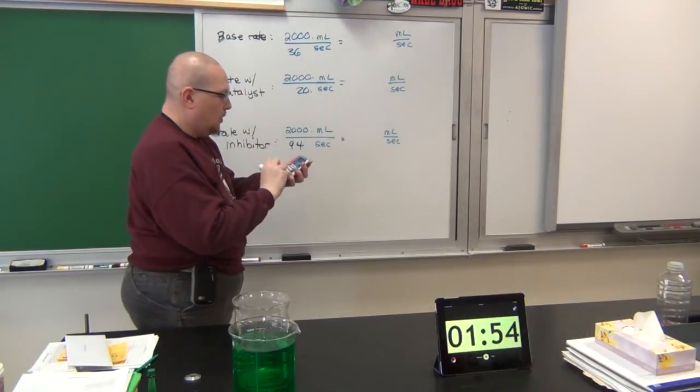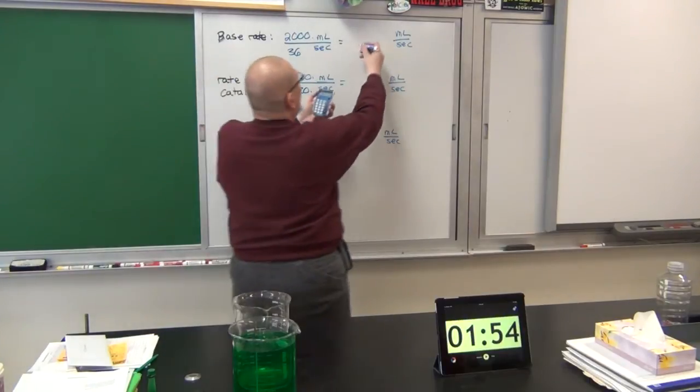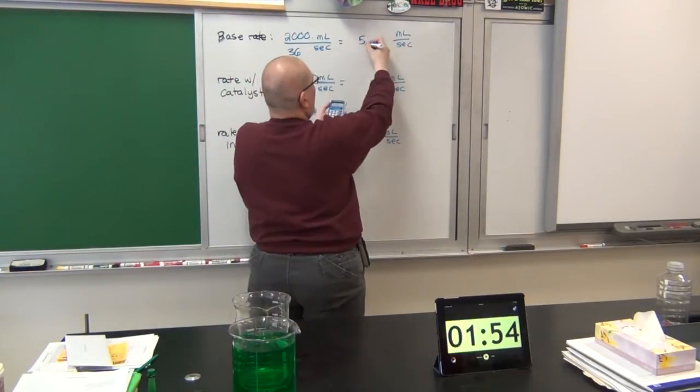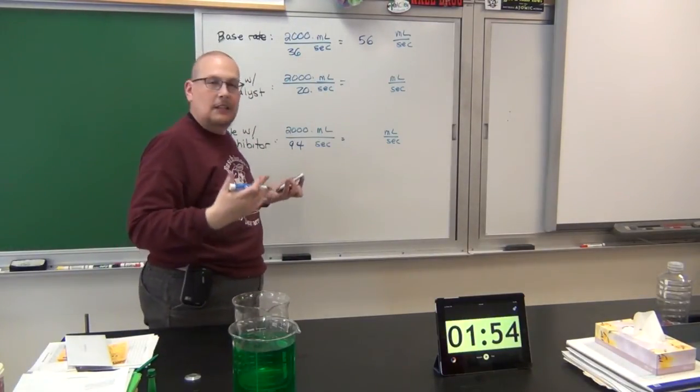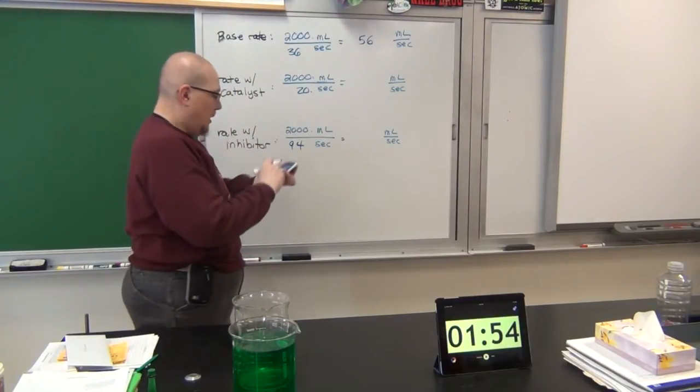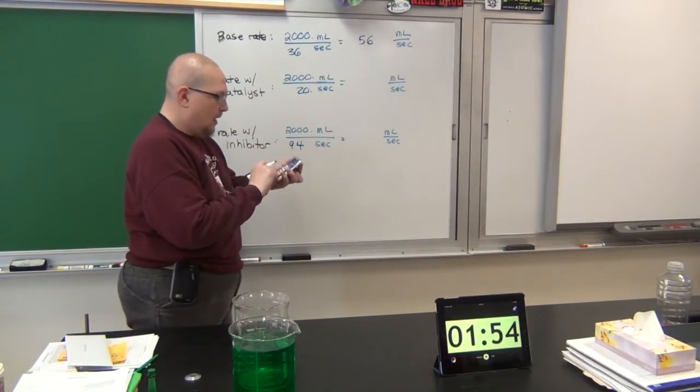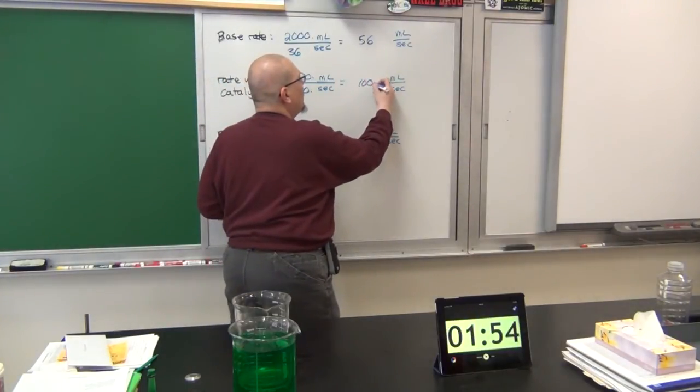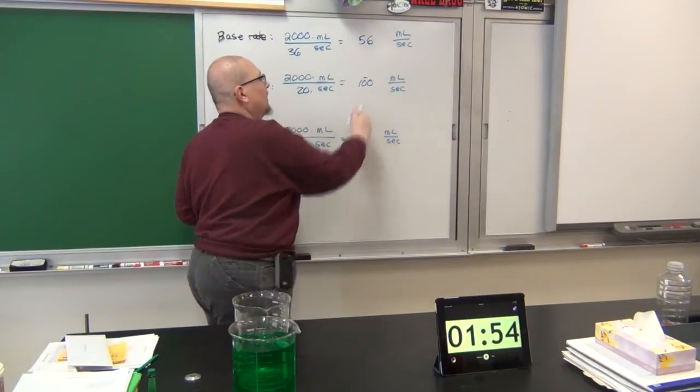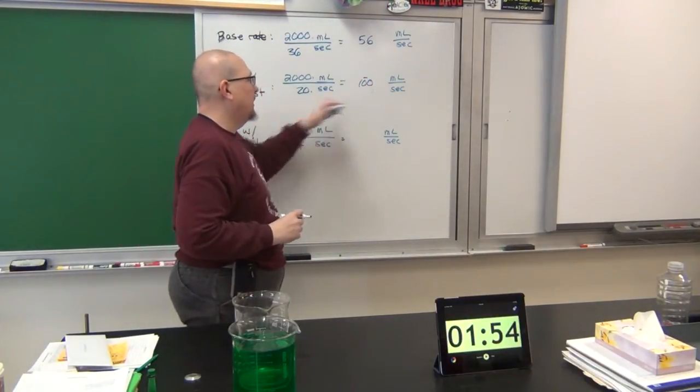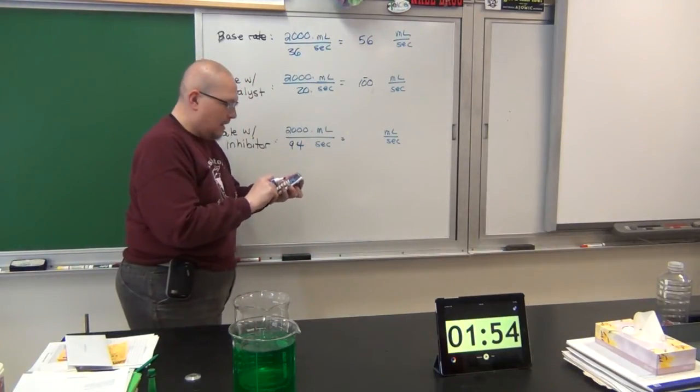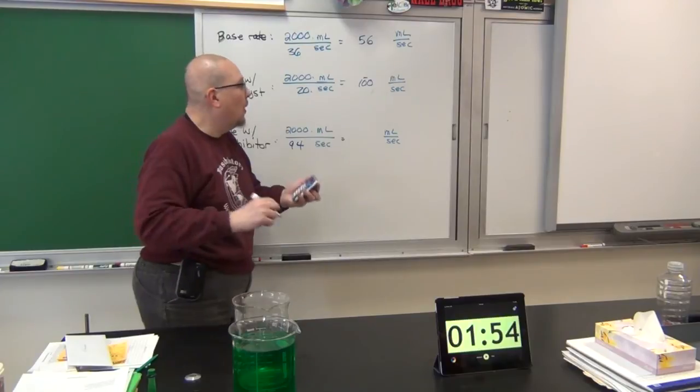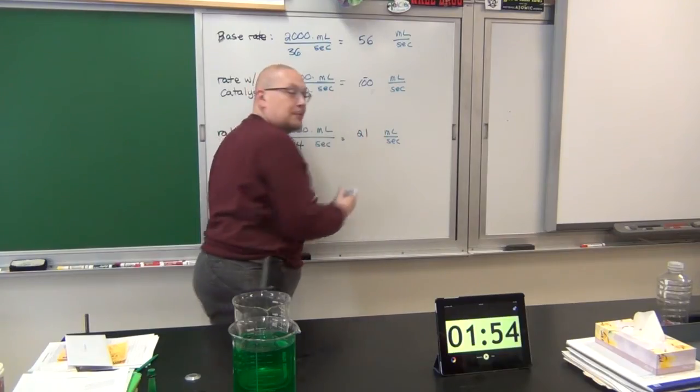Let's calculate the rate and see what that comes out to. For the first one, 2000 divided by 36 gives us a rate of 55.52, sig figs, 56 milliliters per second. So every second, we can expect 56 milliliters to pass through into the other beaker. 2000 divided by 20 for the catalyst, that was a flat 100 milliliters per second. And I can't believe I needed a calculator to figure that out. Let's try the next one. 2000 divided by 94, that comes out to two sig figs, 21 milliliters per second.